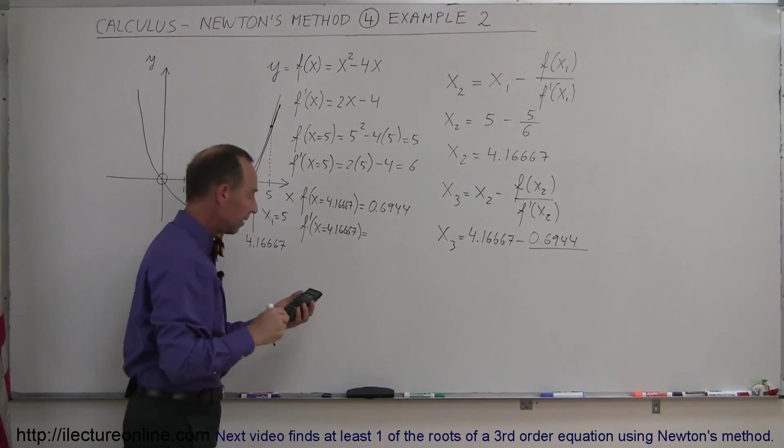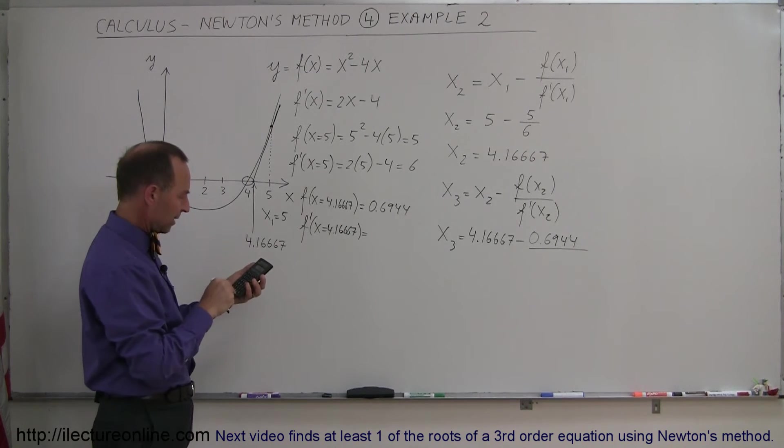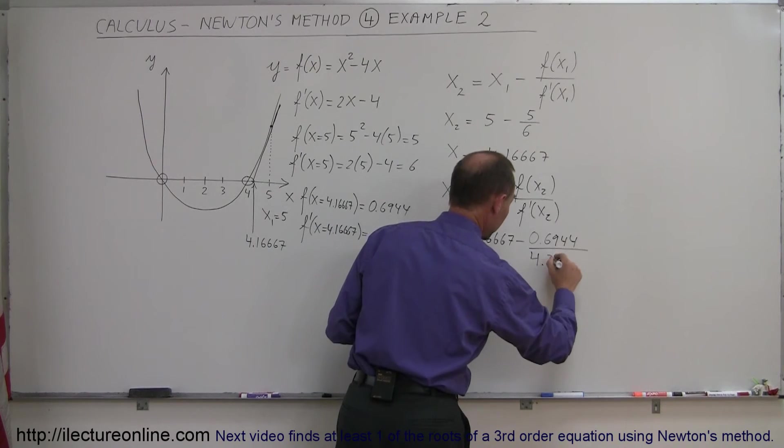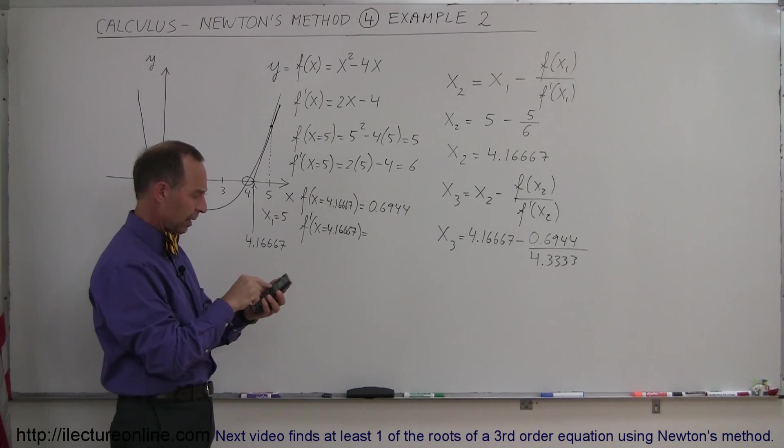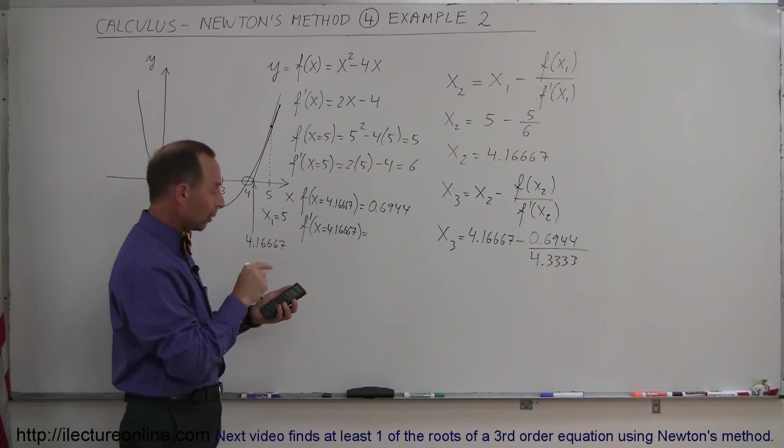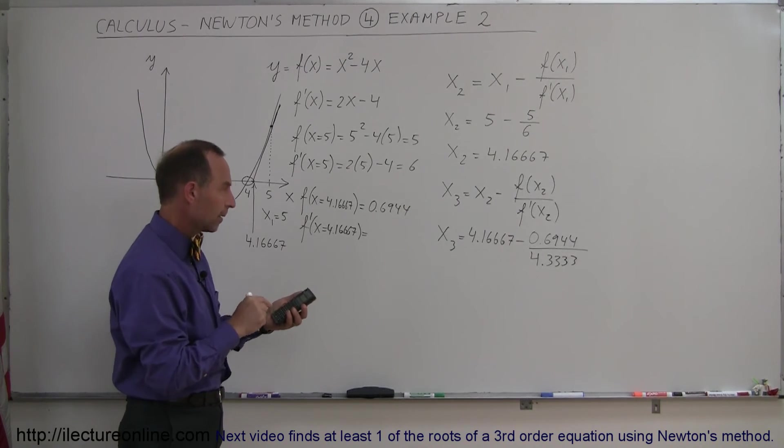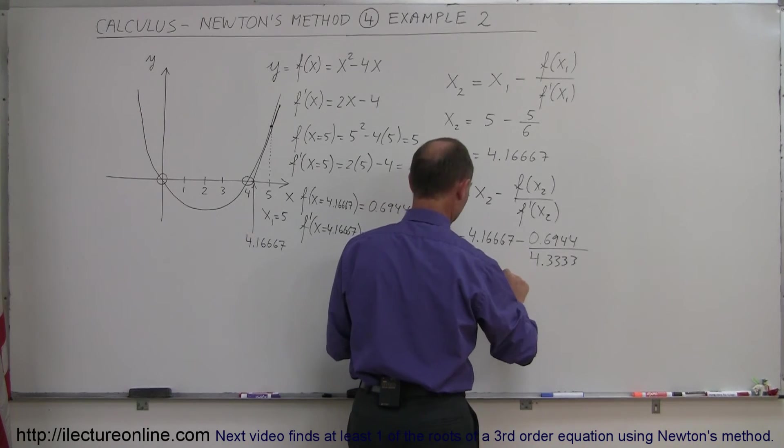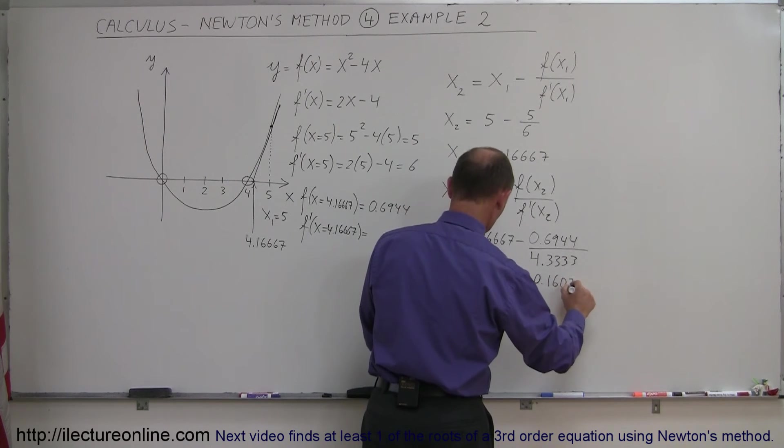So the derivative evaluated at x equals, so let's write it here. So this we set was 0.6944 and the derivative when x equals 4.16667 is equal to, so now we take the derivative, plug that value in for x and see what we get. So that would be 4, not 4 times, but 2 times 4.1666666 minus 4 equals, and we get 4.33333, 4.3333, and if we then figure that out, what do we get? So take the inverse of that, and multiply that times 0.6944, okay, so I get this is equal to 4.16667 minus 0.16025.